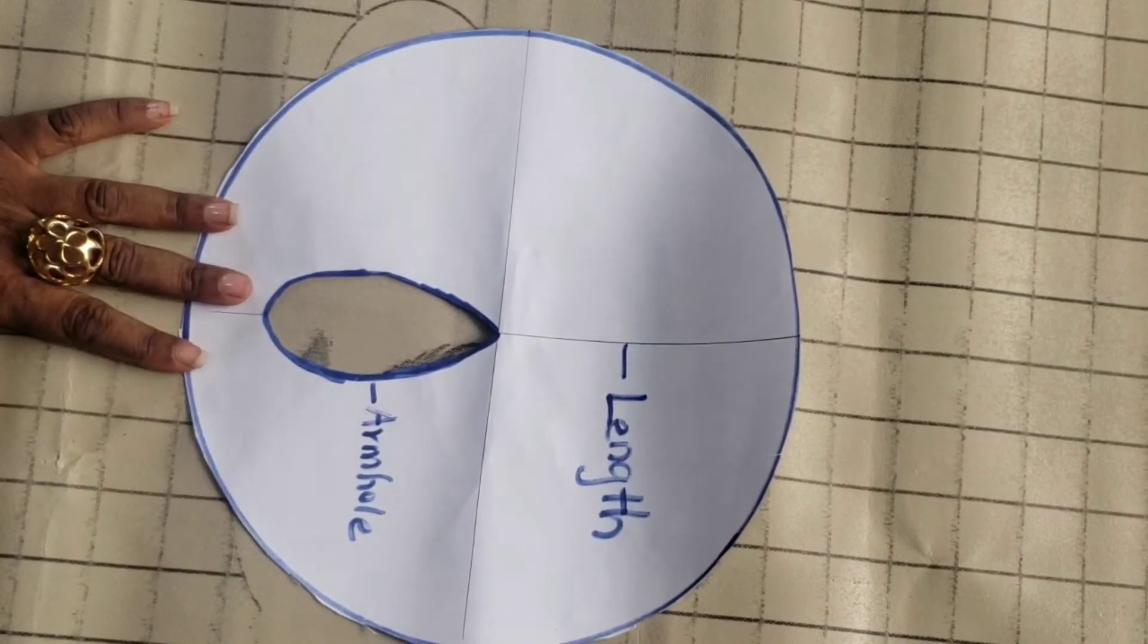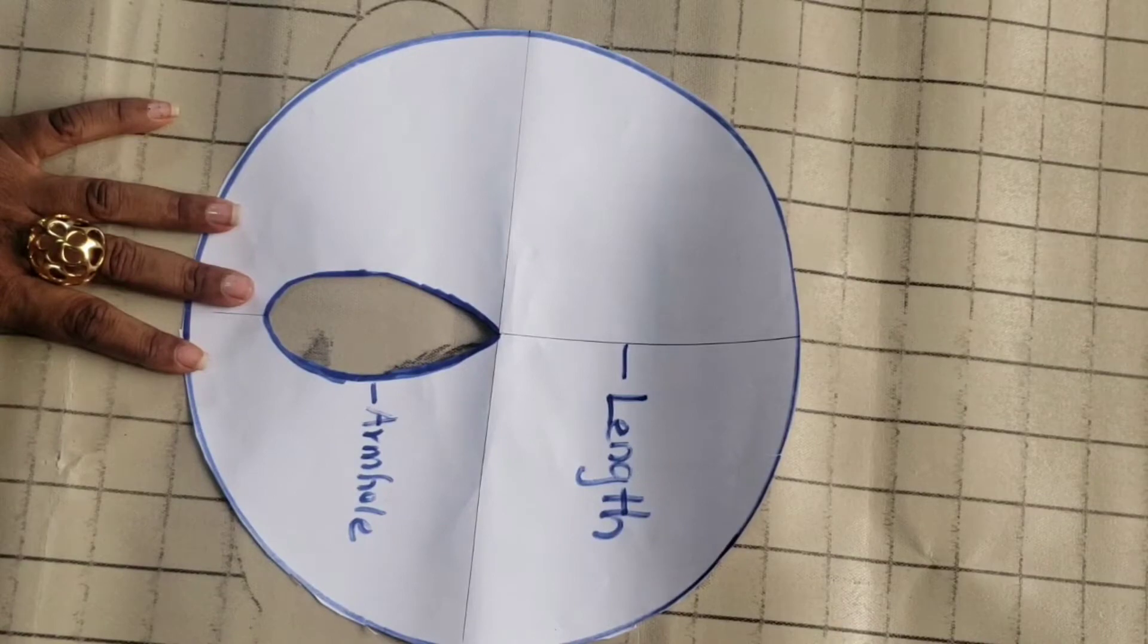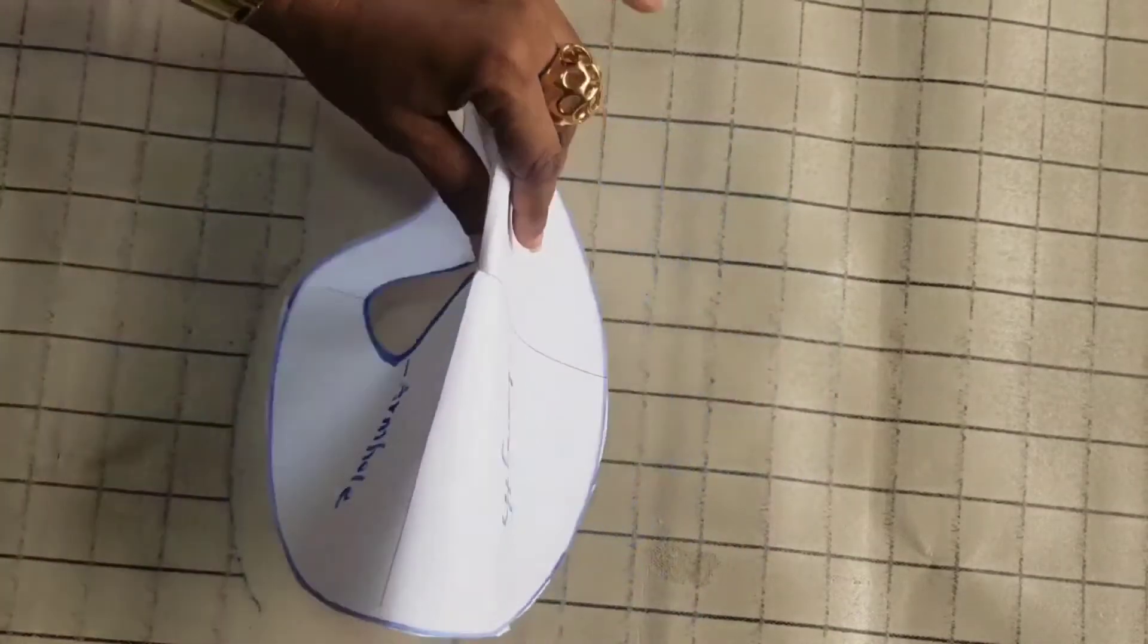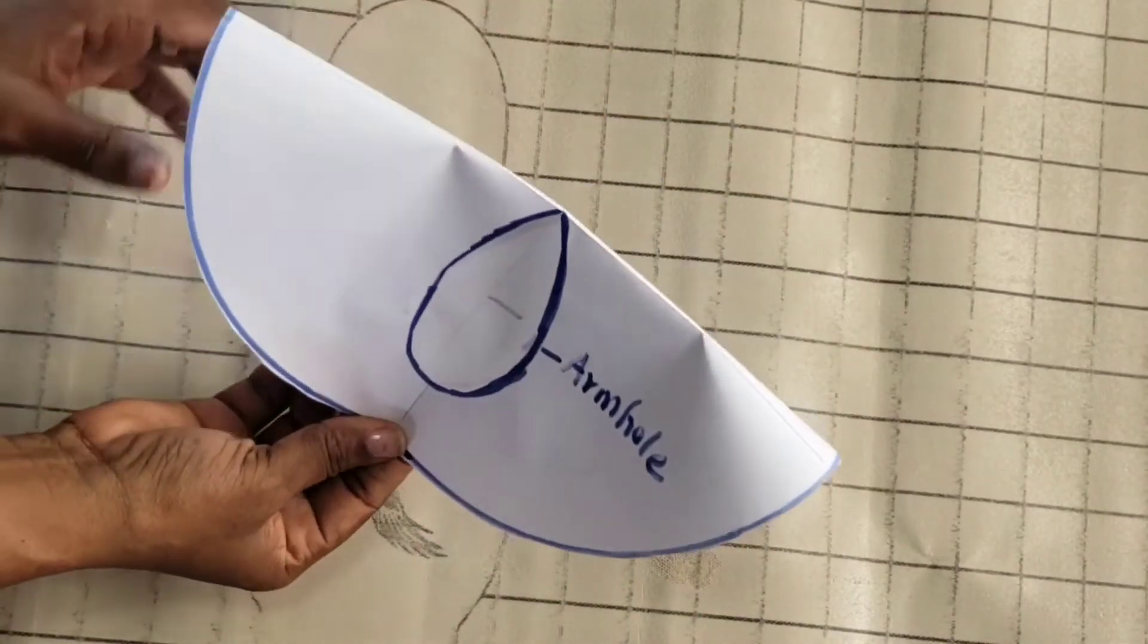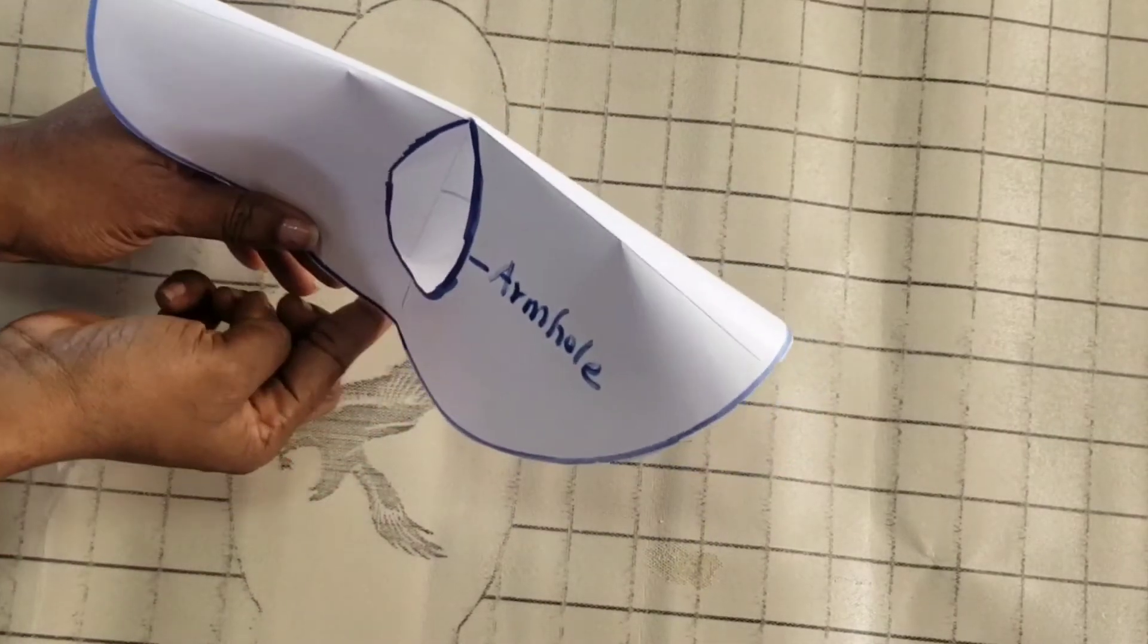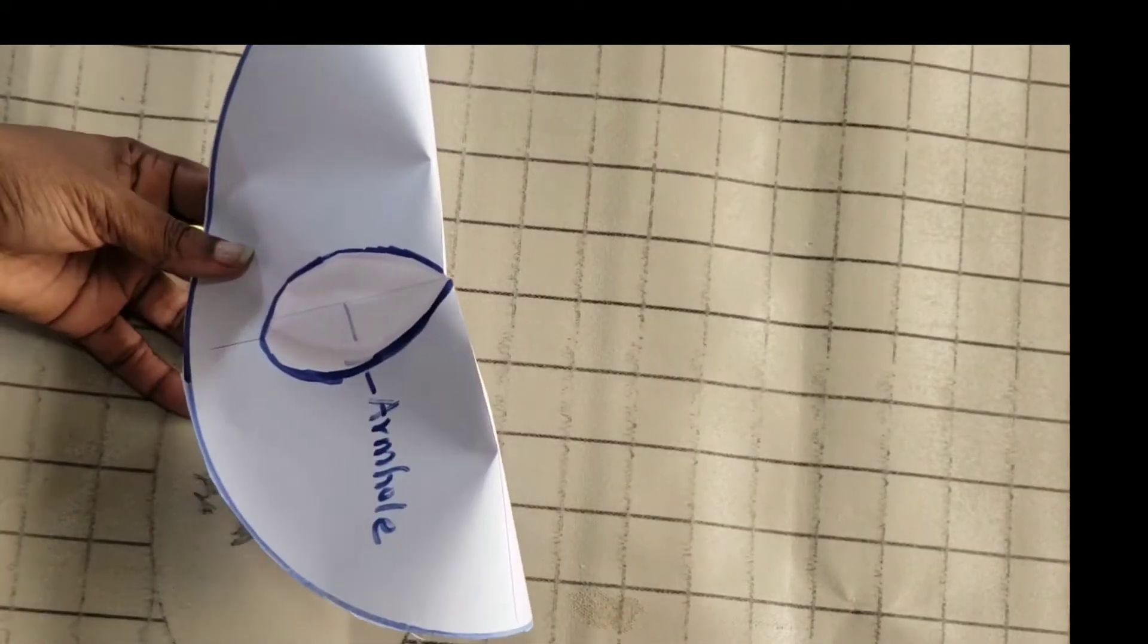The armhole is drafted on just one side of the pattern as you can see, so that when this is fixed to the dress, it stops at the same length. So let's draft the pattern now on our fabric.